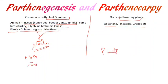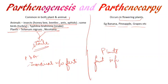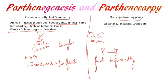To summarize: parthenogenesis occurs in both plants and animals, while parthenocarpy occurs only in plants. In parthenogenesis an individual is formed without fertilization, while in parthenocarpy a fruit is formed without fertilization. A common exam question gives four examples and asks whether parthenogenesis or parthenocarpy occurs — for example, whether honeybee is an example of parthenogenesis or parthenocarpy. Always remember by 'carpy' to avoid confusion.